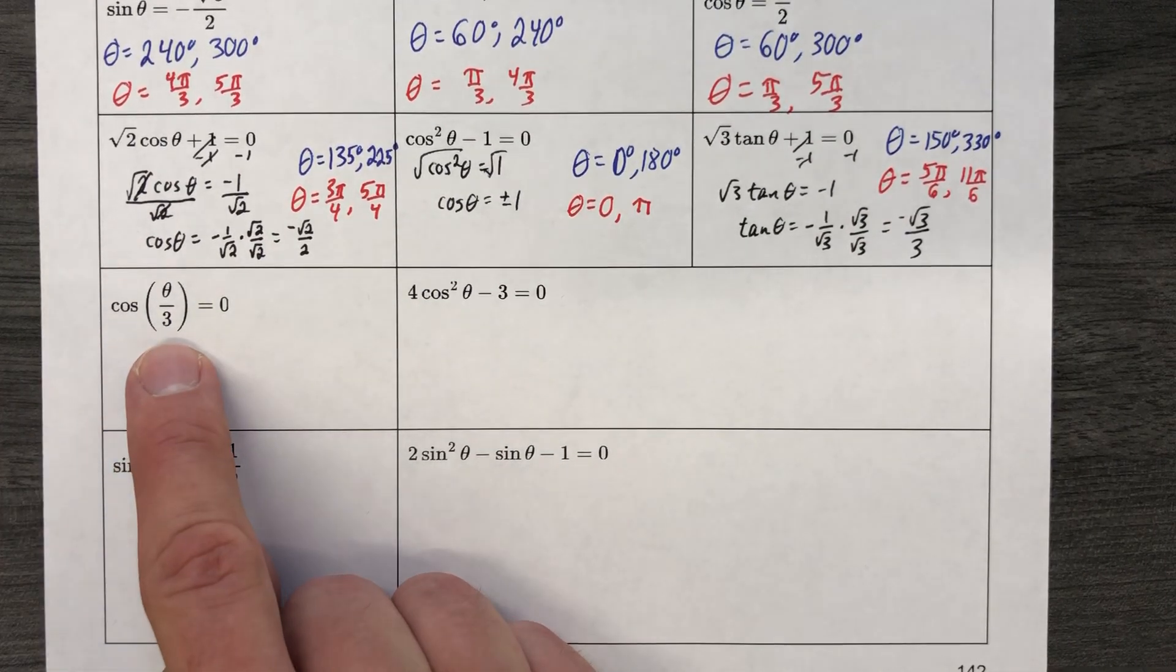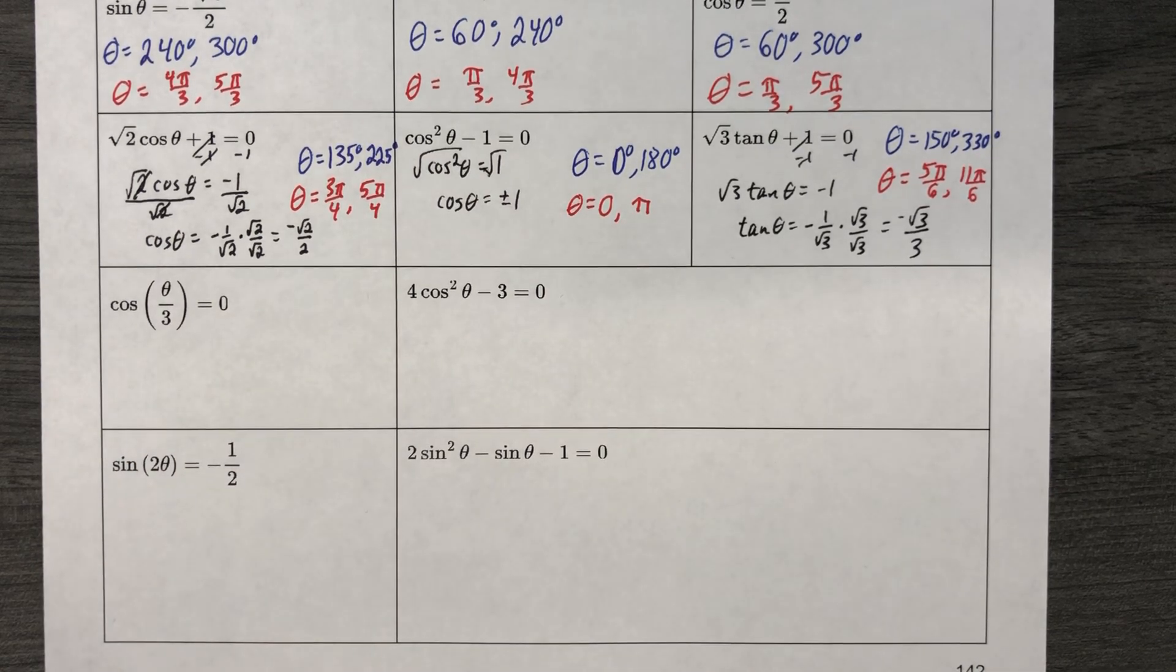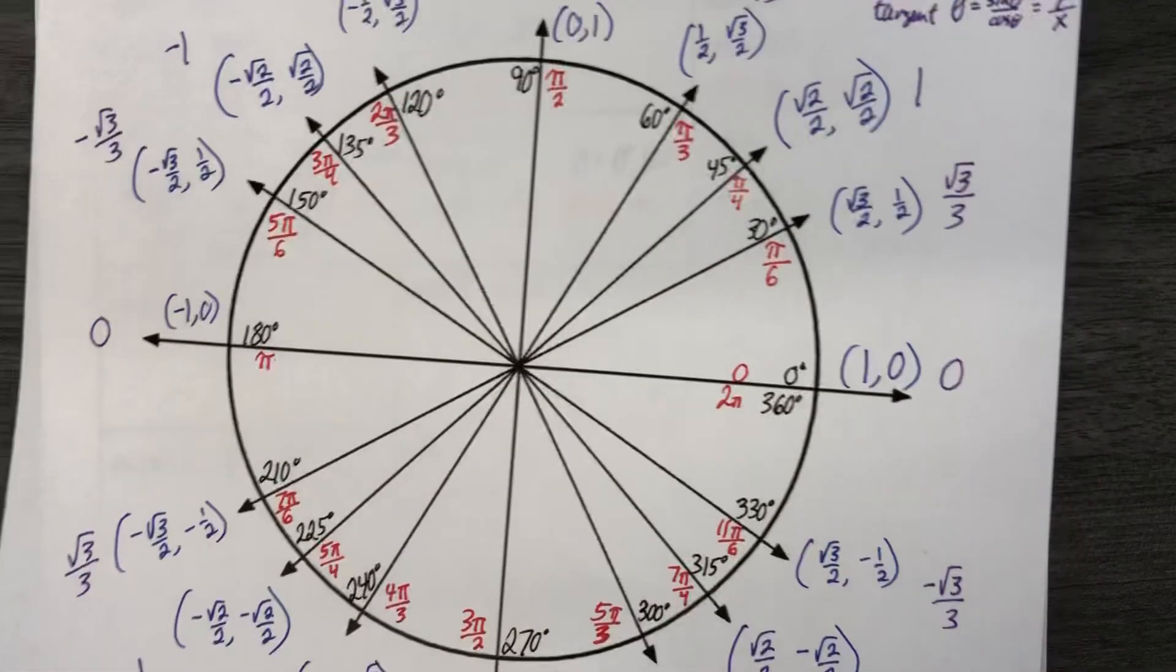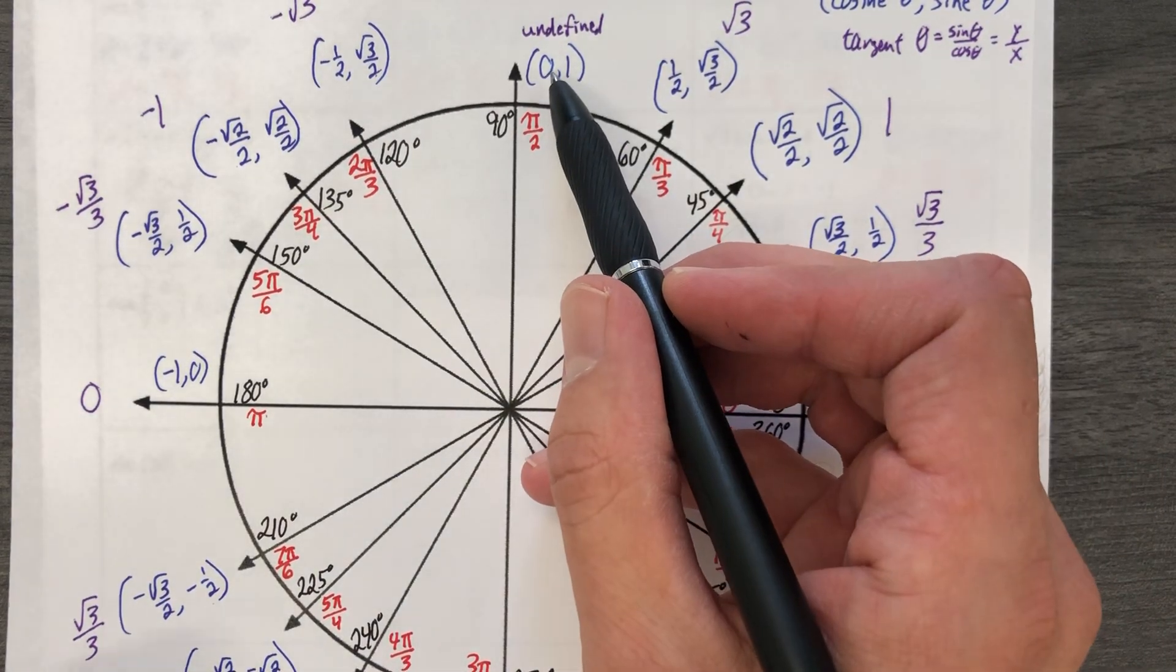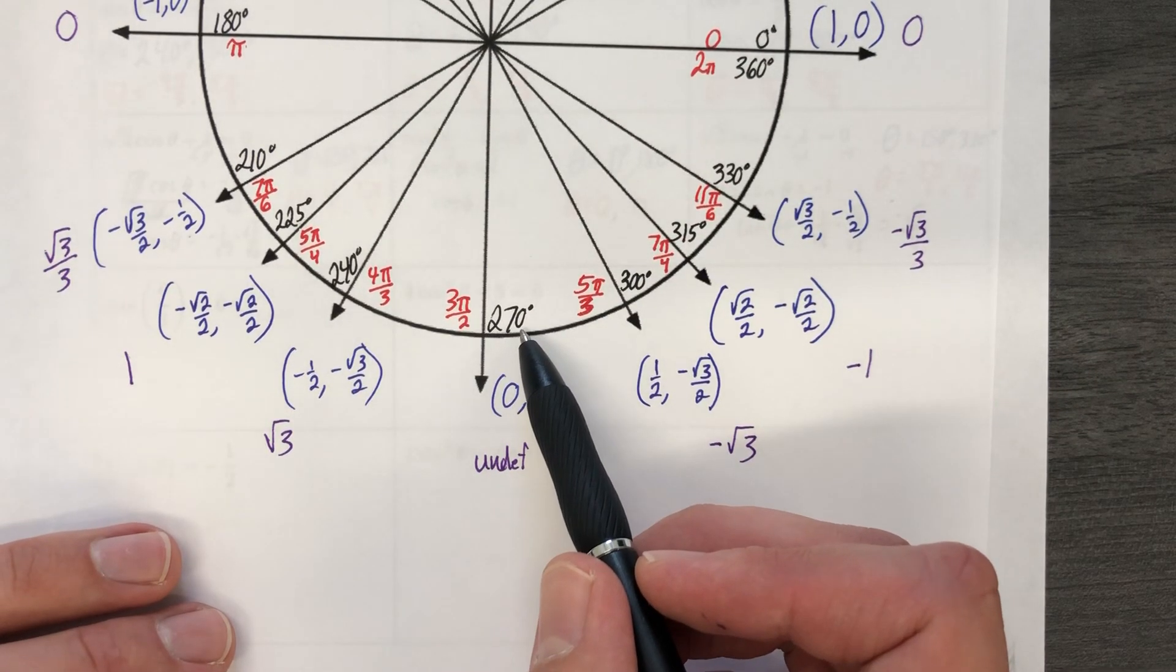So cosine of something, no matter how complicated it is, equals 0. So now the question really is, where is cosine equal to 0 on the unit circle? Well, cosine is equal to 0 on the unit circle here. That's the x value. So that would be 90 degrees, and also at 270 degrees.